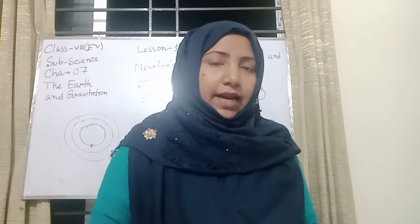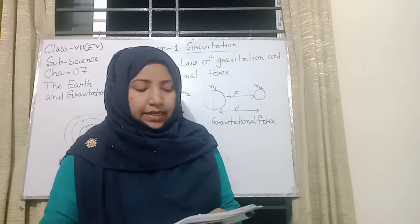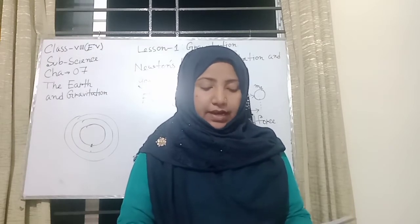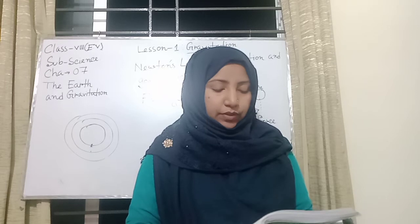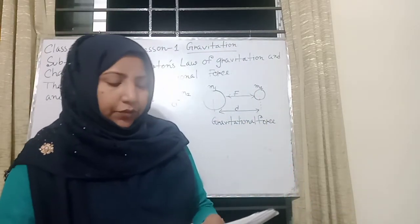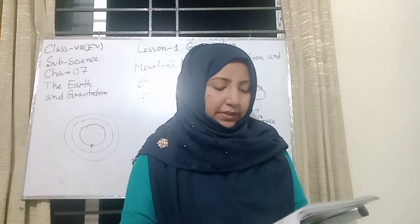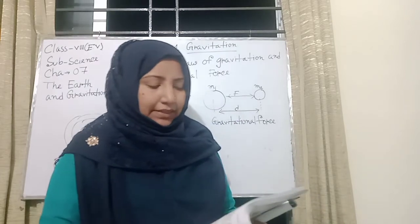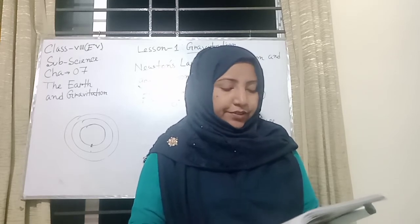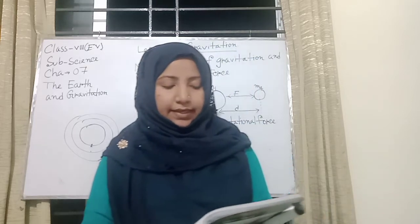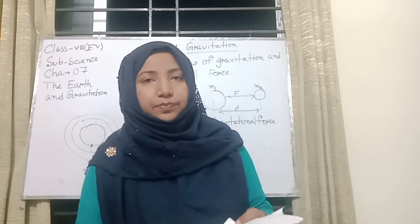Each particle in the universe attracts every other particle with a force which is proportional to the product of their masses and inversely proportional to the square of the distance between them. Newton developed an important theory that the gravitational attraction between two homogeneous spheres is proportional to the product of their masses and inversely proportional to the square of the distance between their centers. This is because for spherical bodies, the whole mass of the sphere can be assumed to be at the center of the sphere, provided the observer is outside the sphere and the sphere is homogeneous.